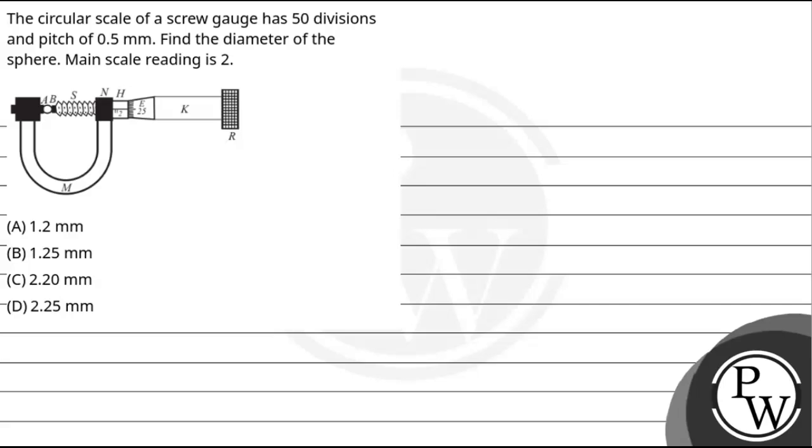Hello, let's read this question. The question says the circular scale of a screw gauge has 50 divisions and pitch of 0.5 mm. Find the diameter of the sphere. Main scale reading is 2.